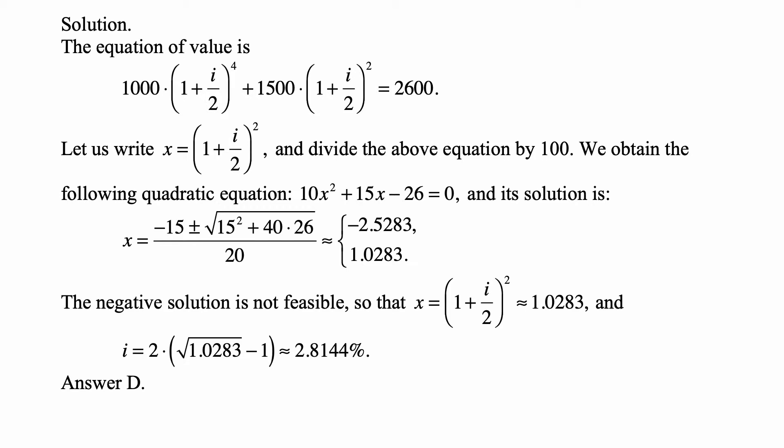10x squared plus 15x minus 26 is equal to 0. The solution is x equals negative 15 plus or minus the square root of 15 squared plus 40 times 26, the whole expression divided by 20.